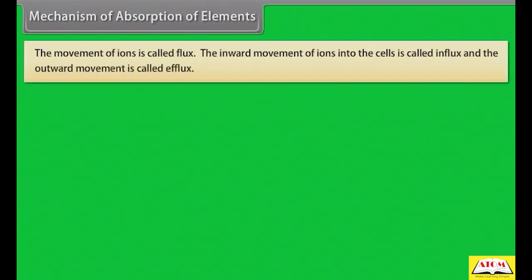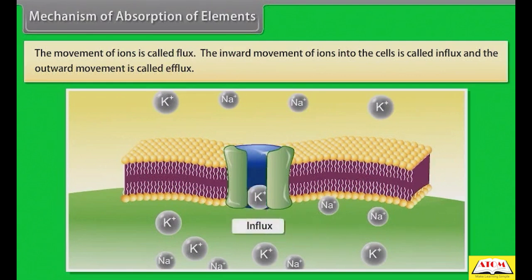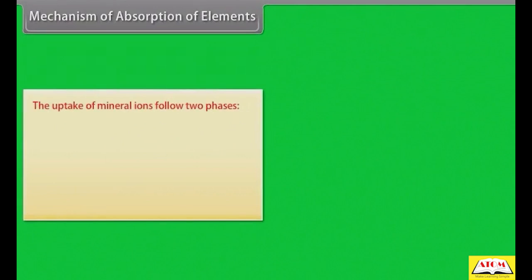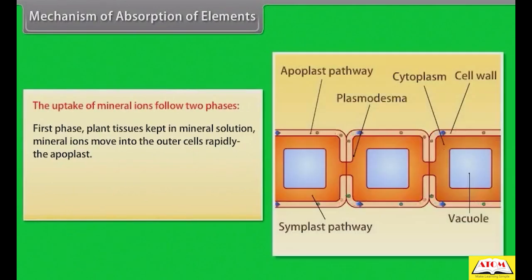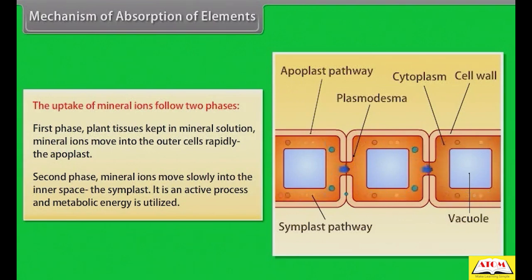Mechanism of absorption of elements. The movement of ions is called flux. The inward movement of ions into the cells is called influx, and the outward movement is called efflux. The uptake of mineral ions follows two phases. First phase: plant tissues kept in mineral solution, mineral ions move into the outer cells rapidly — the apoplast. Second phase: mineral ions move slowly into the inner space — the symplast. It is an active process and metabolic energy is utilized.